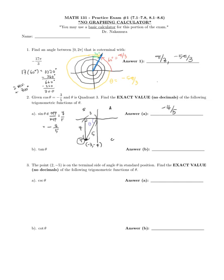For tan θ, using x, y, and r: tangent is y over x. y = −4, x = −3, so the negatives cancel and our answer is 4/3.